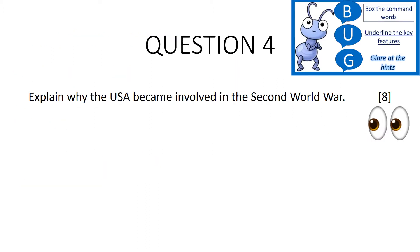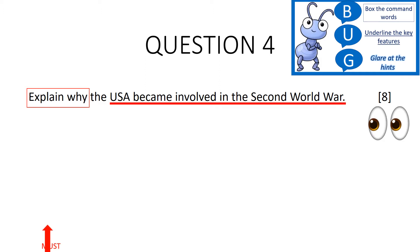Let's try one together. Explain why the USA became involved in the Second World War. If we debox our command word, which is 'explain why', and underline our key feature, which is the USA becoming involved in the Second World War, we will glance at the hints, which is just the marks this time round. What a lot of people miss out on is explaining why. It's not good enough to say the USA became involved in World War II because of Pearl Harbour — you need to explain why that would lead specifically to war.